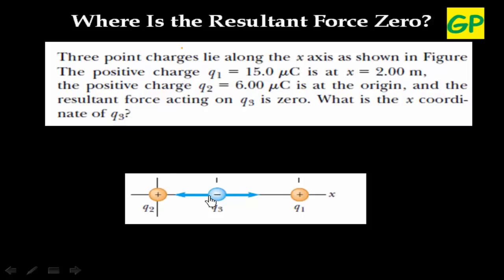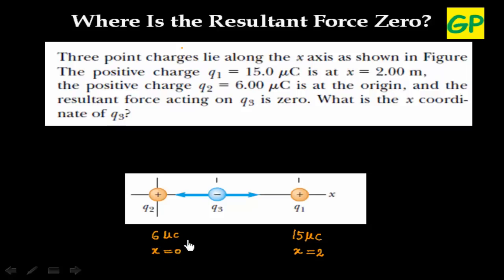We have three charges placed along the x-axis. Q1 has a magnitude of 15 micro coulombs and is placed at x equals 2 meters. We have another charge of 6 micro coulombs — this is positive — placed at x equals 0. We have a third charge Q3, and we need to find its x-coordinate. It is also given that the resultant force acting on Q3 is zero.